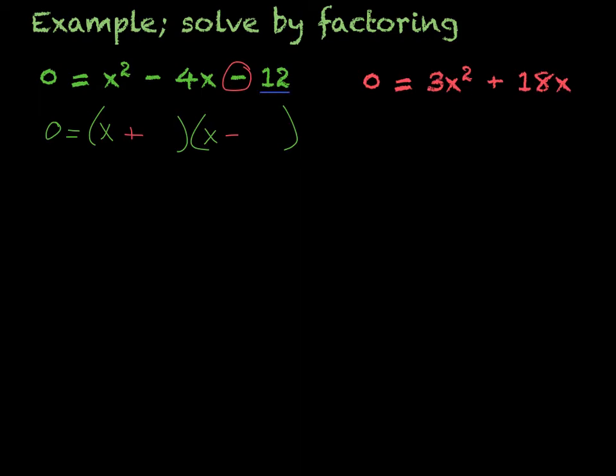And then we have to figure out our numbers. Multiply together to get negative 12, add together to get negative 4x. So, factors of 12 are 1 times 12, 3 times 4, and 2 times 6. Those are my factors of 12, so one of those pairs should be it.